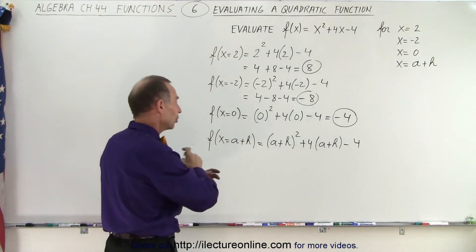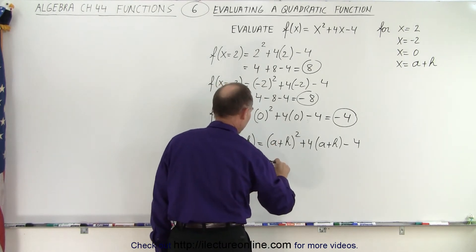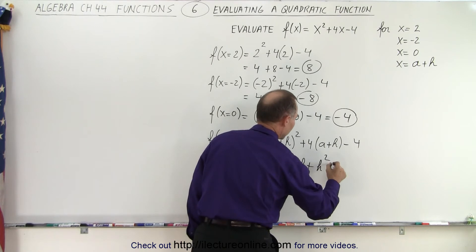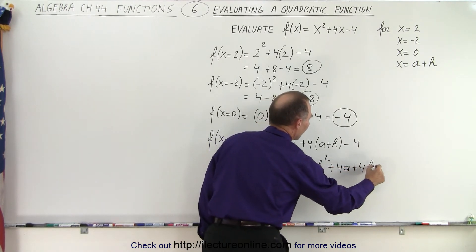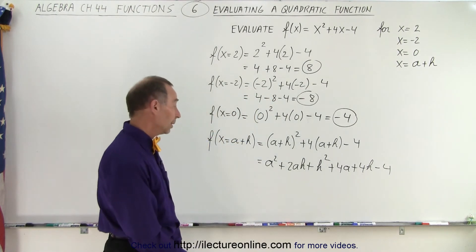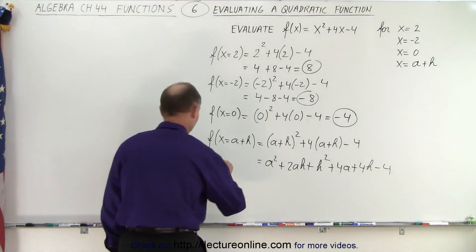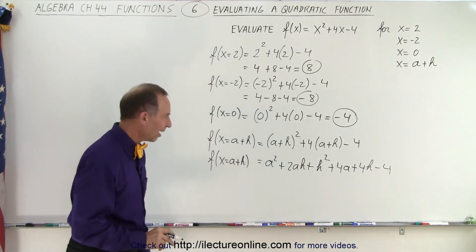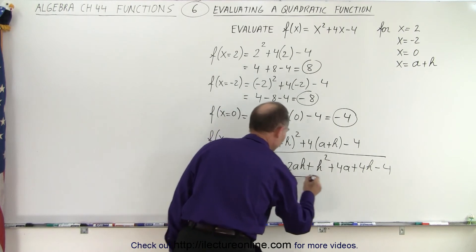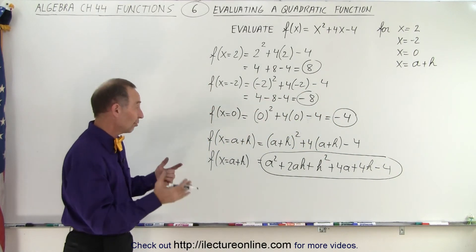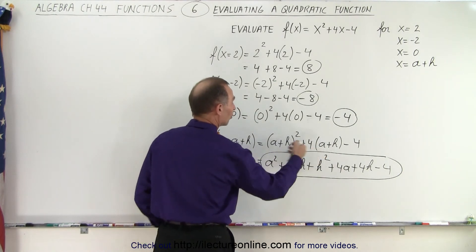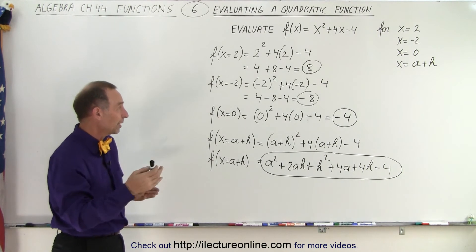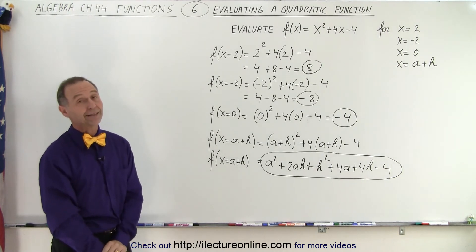Then I just multiply everything out, collect common terms, and see what happens. This is equal to a squared plus 2ah plus h squared plus 4a plus 4h minus 4. There aren't any common terms, so I can't simplify anything. This is the function evaluated when x equals a plus h. All you have to do is replace every x by a plus h, multiply everything out, and there it is. That's how you evaluate a function — no matter what the number or expression is that you replace x with, you simply plug it in and work it out.